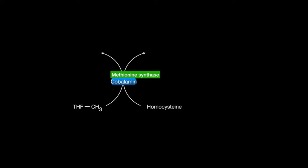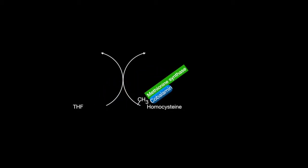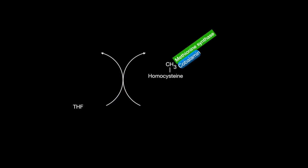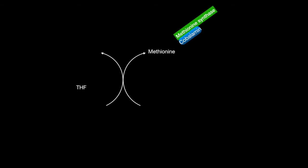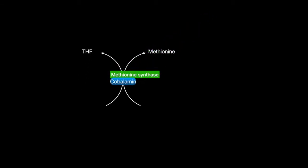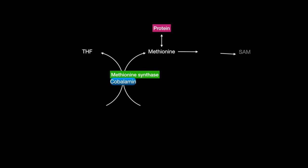Methionine synthase is used to transfer a methyl group from N5-THF to homocysteine, which produces methionine and THF. The methionine can be used to make proteins, or S-adenosylmethionine (SAM), which is a cofactor that can transfer methyl groups for anabolism.